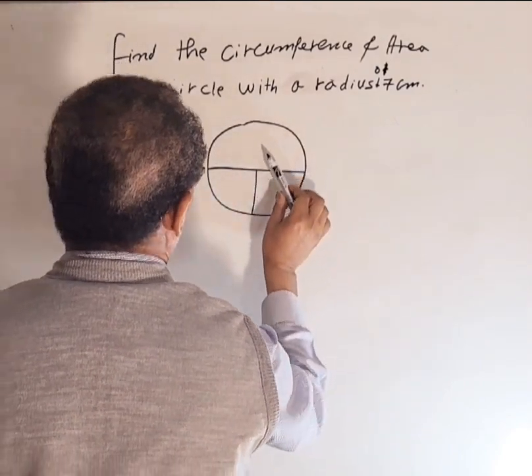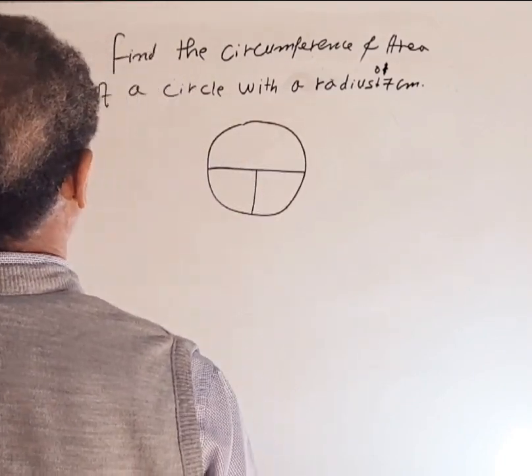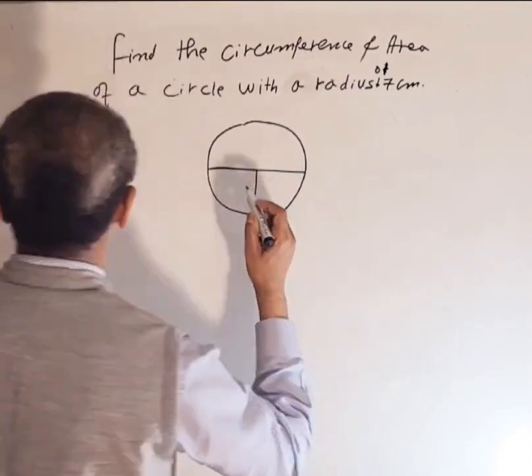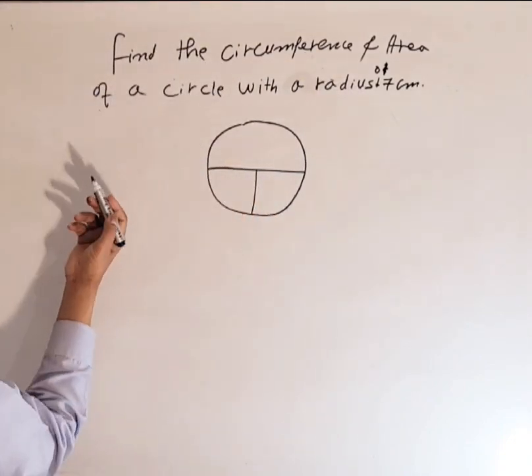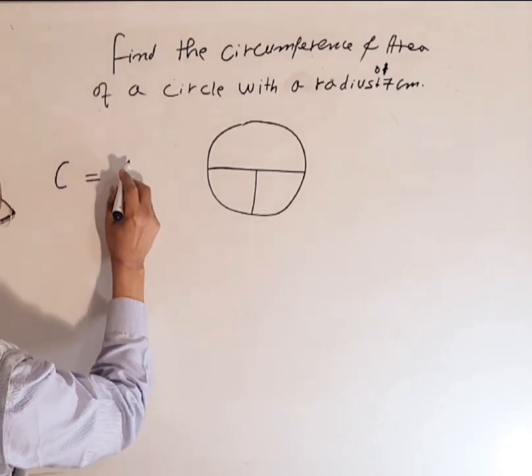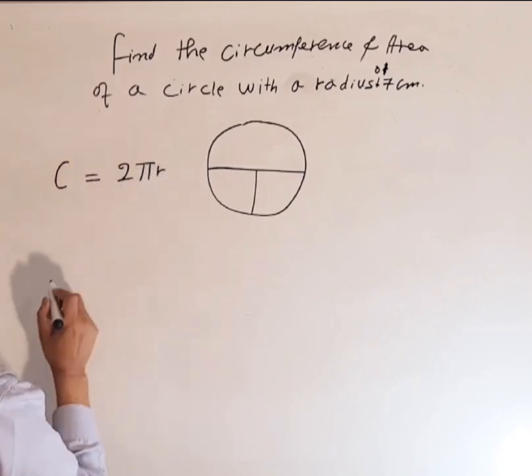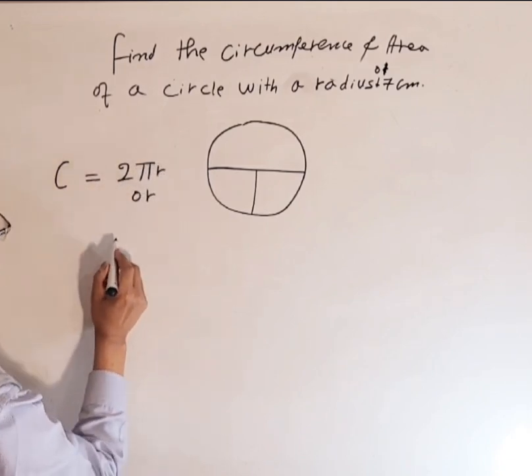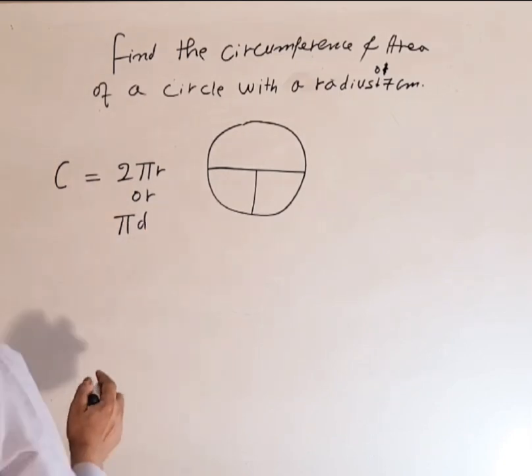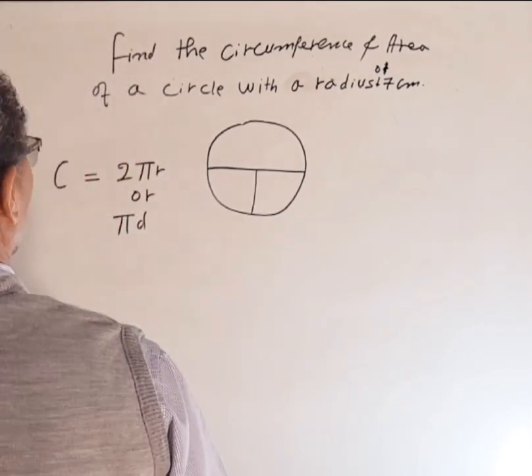Let's do the circumference. Let's write down the formula: C equals 2πr or πd. It depends which one you are given. In this case, we are given radius is 7 centimeters.